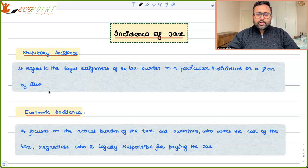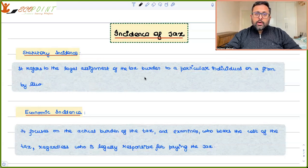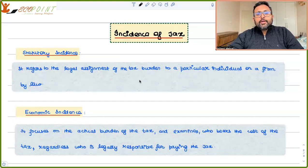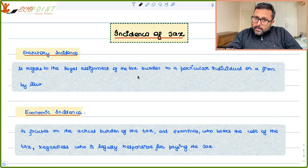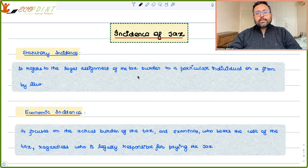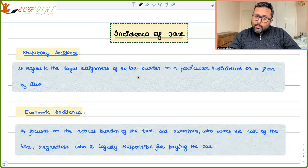Let's read the definitions. In the case of statutory incidence, you have a legal assignment of the tax burden to a particular individual or a firm by law — a particular person or firm is liable to pay a tax. That's one issue, whether they will be paying all tax or sharing the burden. Economic incidence is the actual burden of the tax — it examines who bears the cost of the tax. Supposedly, I am the seller but I pass on 100% of the burden to you — you will be bearing the entire cost. So, economic incidence is on you, although statutory incidence is on me.